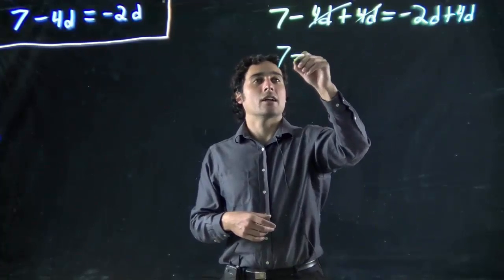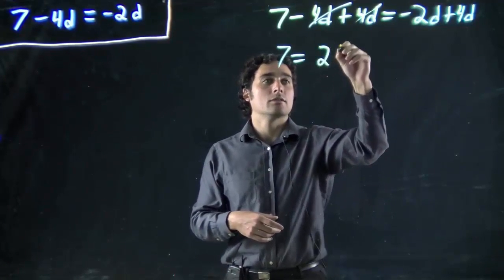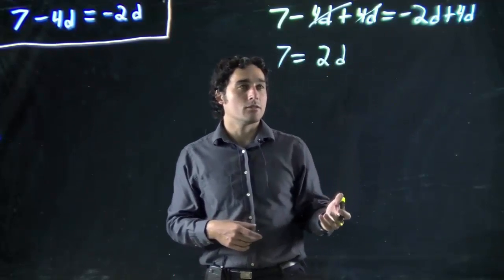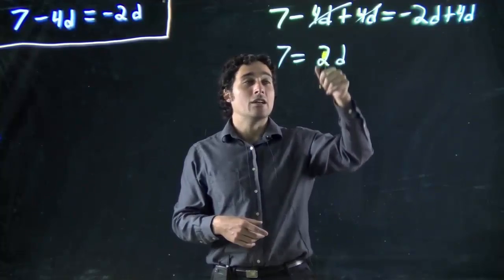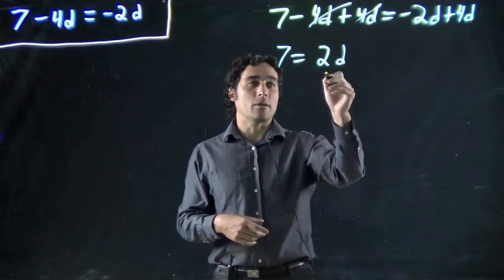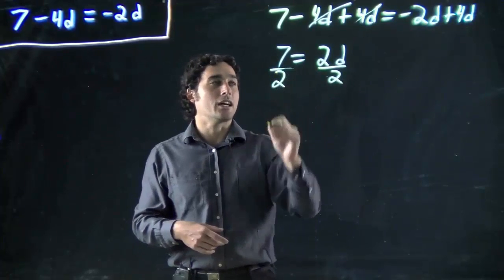We're left with 7 on this side, and what we got is minus 2d plus 4d, or 2d. Again we want the variable all on its own, so we have to do the opposite of what's being done to the variable. We're multiplying by 2, so the opposite is divide by 2, and as always the same to both sides. This will cancel.